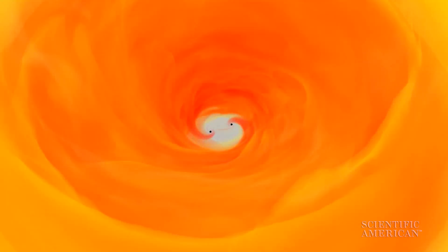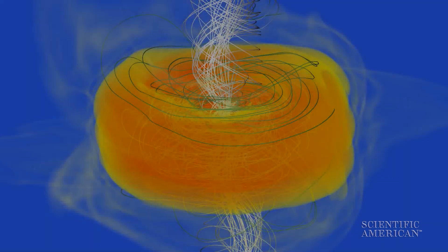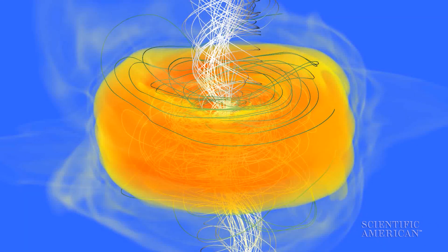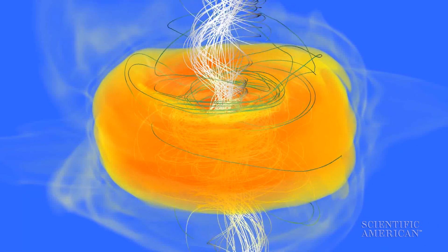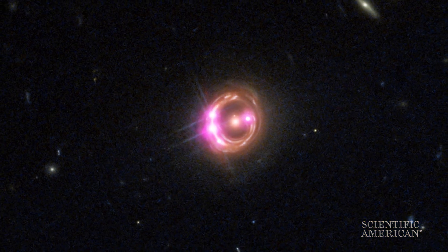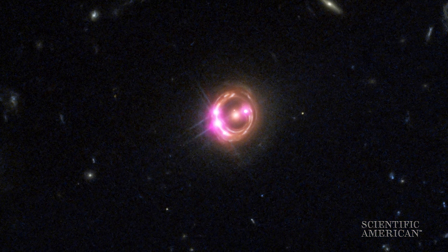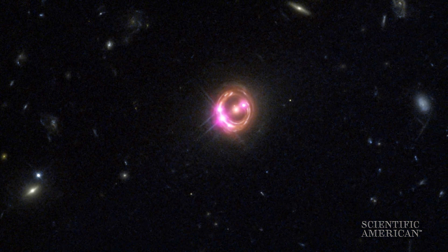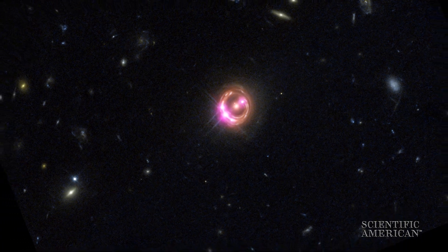When two supermassive black holes get near each other, their gravity draws them closer and closer. Gravity also pulls in a donut-shaped disc of gas from the surrounding galaxy. This gas heats up and radiates jets of light we can see from across the universe. These jets are the most luminous objects in the sky.